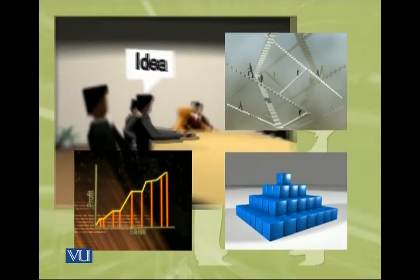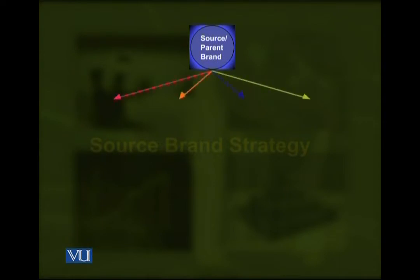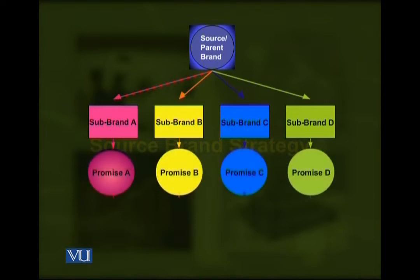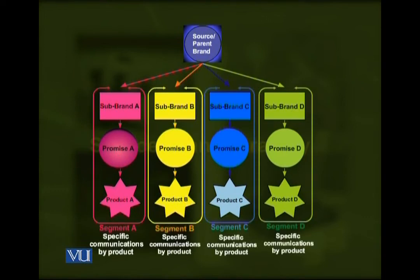Let us take a look at the graphical illustration for a clear understanding of this concept. As you can see, we have four different sub-brands under the source brand. Each brand is catering to the needs of one particular segment — this is where it has similarities with the umbrella brand strategy, but the brand name here is different for each segment. We have a clear set of promises compatible with the different segments, and specific communications for each of these brands.